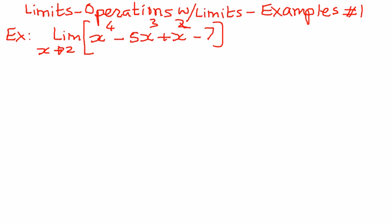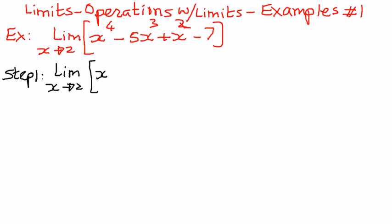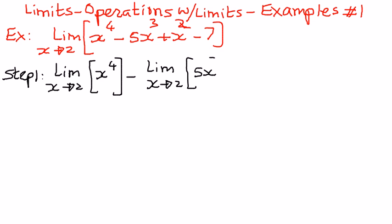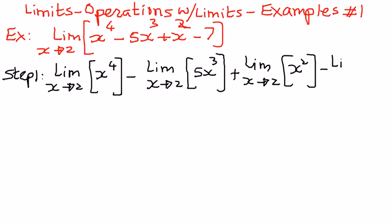The way we can solve these types of problems is as follows. In step number 1, we are going to separate out each term into individual functions: limit as x approaches 2 of x to the power of 4, minus the limit as x approaches 2 of 5x to the power of 3, plus the limit as x approaches 2 of x to the power of 2, minus the limit as x approaches 2 of the constant 7.